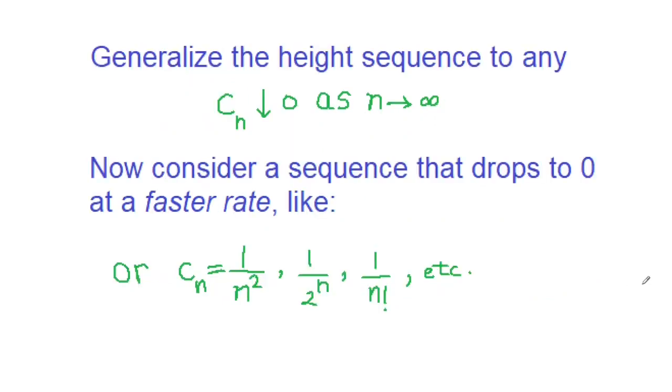To get that, let's generalize the height sequence to any sequence c_n that is decreasing to 0. That's what the down arrow means. As n goes to infinity, c_n is decreasing to 0. So, c over 2n certainly is decreasing to 0 for any fixed value of c as n goes to infinity. Now, what we want to do is to go one step beyond c over 2n and consider sequences that go to 0 at a faster rate, which means that they converge to 0 much more quickly. Examples of such sequences are 1 over n squared or 1 over 2 to the n or 1 over n factorial. And let's consider what happens if we pick heights or thickness equal to one of these sequences.